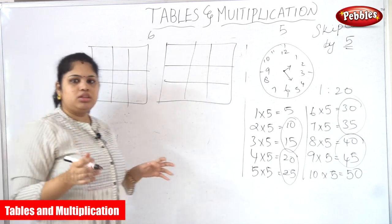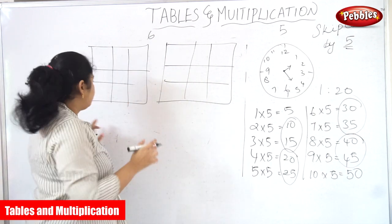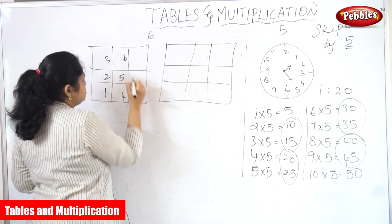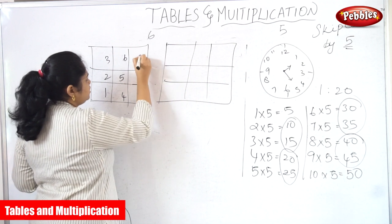So as in your third table, you are going to write 1, 2, 3, 4, 5, 6, 7, 8, 9.